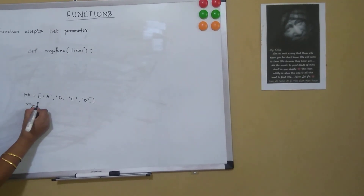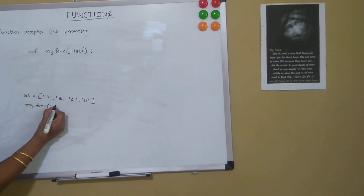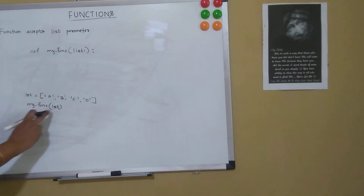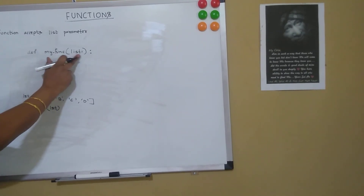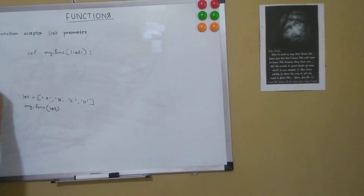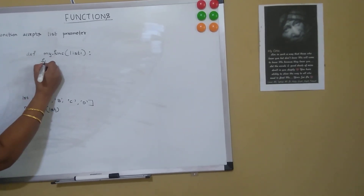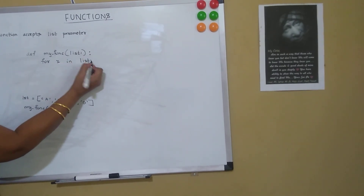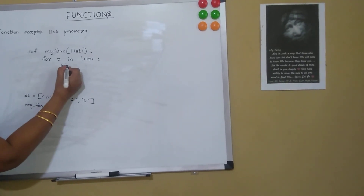This is the calling statement. When I pass lst, the function gets called and list1 will have A, B, C, D. Now within my_function I say: for x in list1: print(x). So I am passing a list as the parameter, the function accepts it, and it will iterate through each item and print it.